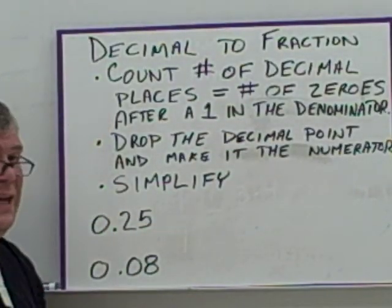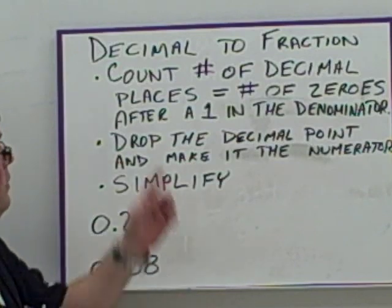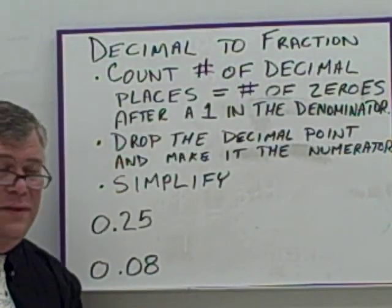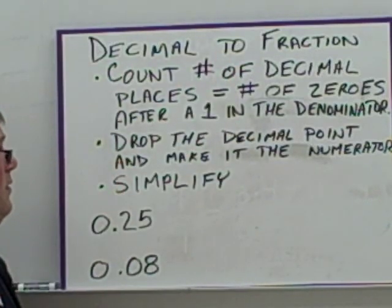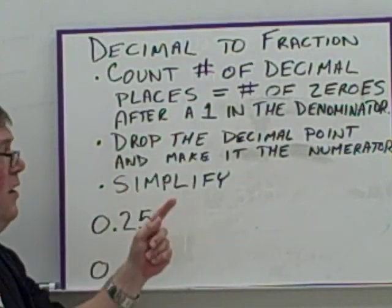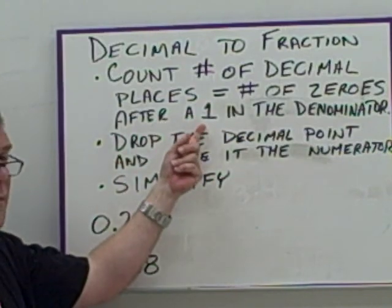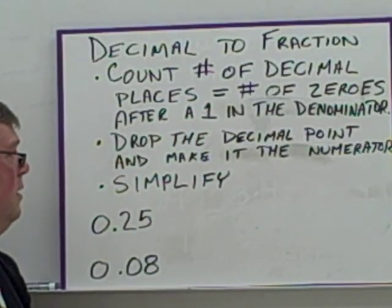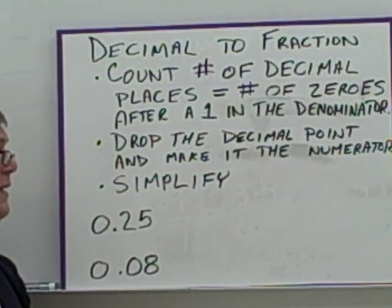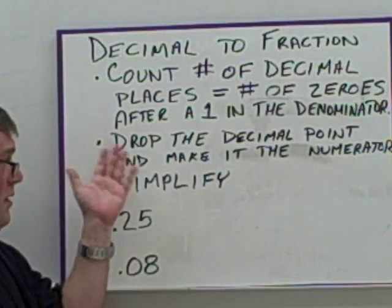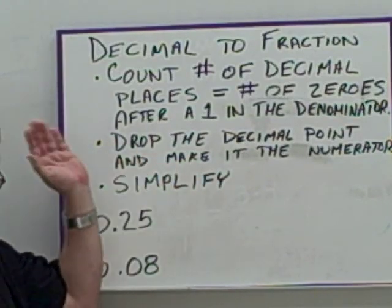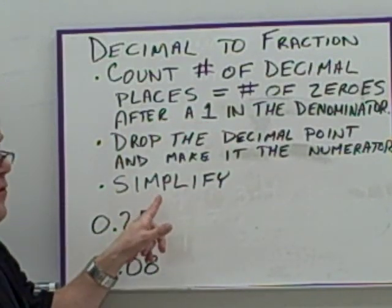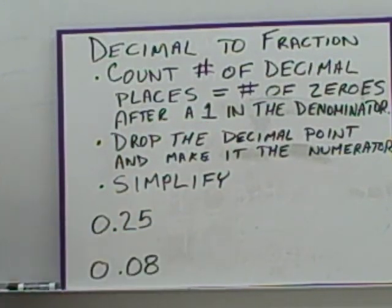Now we're going to go from decimal to fraction. To convert from a decimal to a fraction, you count the number of decimal places — that equals the number of zeros after the number one in the denominator. Then drop the decimal point and make the number your numerator. Simplify the resulting fraction.